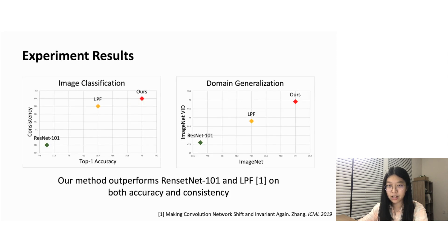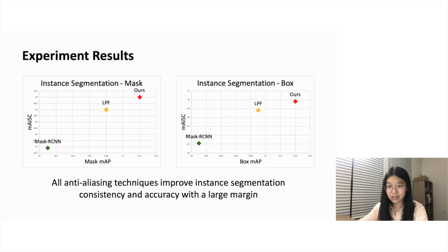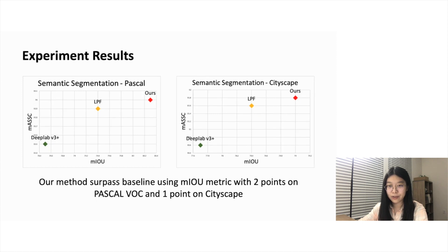For image classification on ImageNet, our method outperforms ResNet-101 and the LPF baseline on both accuracy and consistency. At the same time, the learned weights generalize well to other datasets. In pixel classification tasks, we use Mask R-CNN as our baseline and insert the anti-aliasing module on its backbone. We found both LPF and our approach surpassed the baseline with a large margin, especially on consistency. This observation generalizes well to semantic segmentation with DeepLab V3+ as backbone. Our method surpassed the baseline by two points on Pascal VOC and one point on CityScapes using the mIoU metric, which is a nice improvement on semantic segmentation tasks.